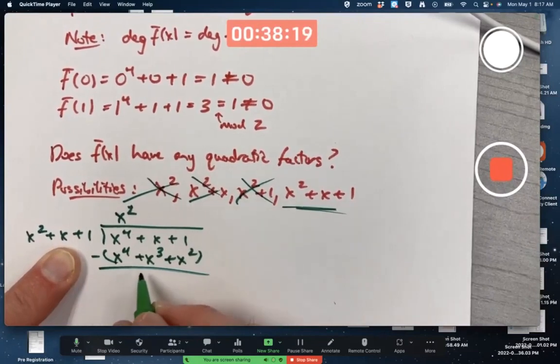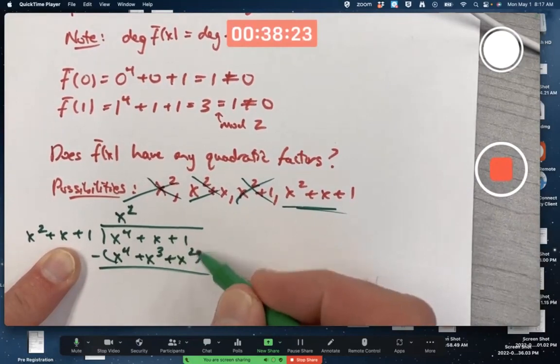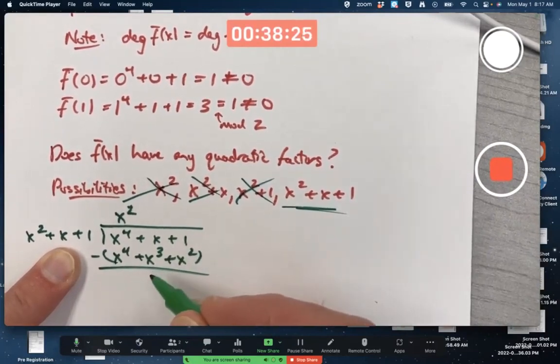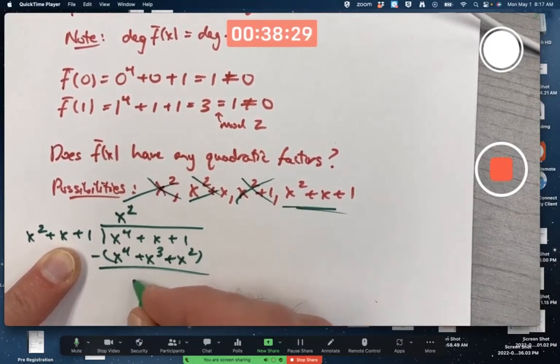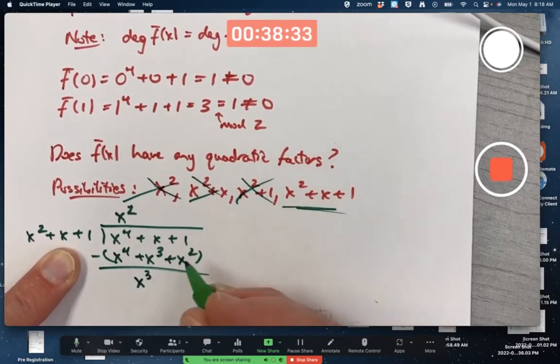Subtract. The x to the fourths cancel. There's no x cubed term up here. We're subtracting x cubed there, but then we're modding by 2. Negative x cubed is the same as positive x cubed mod 2. Same kind of thing happens with the x squared term. And we also bring the x and the 1 down.